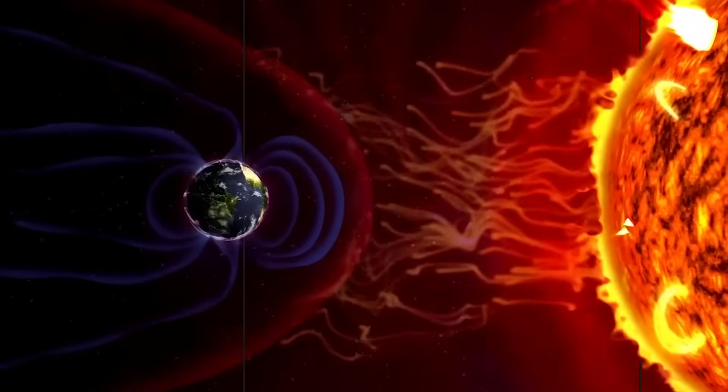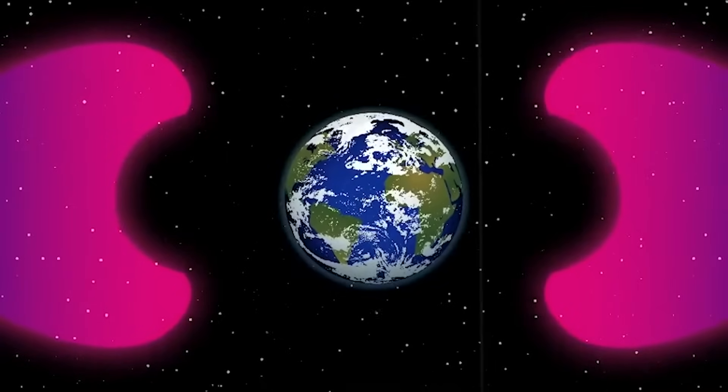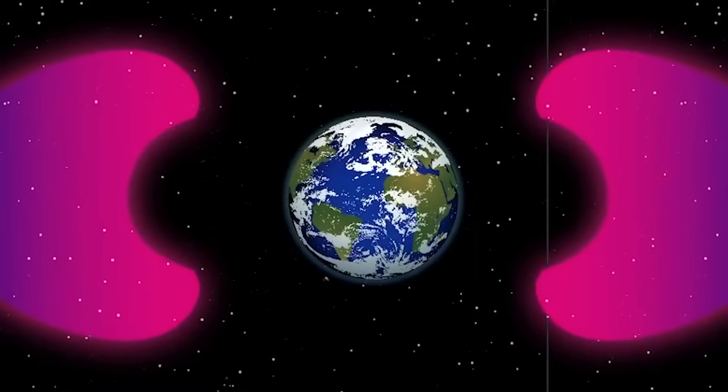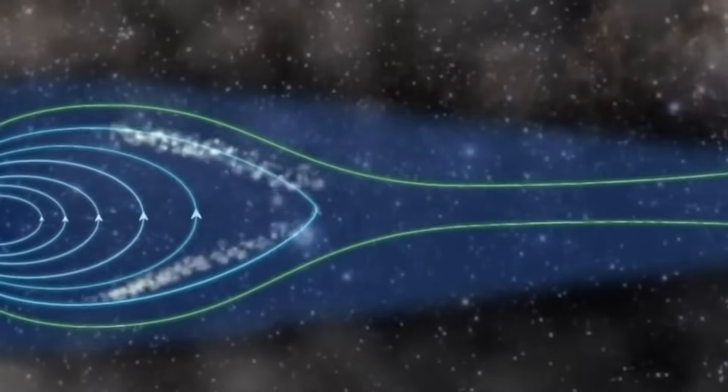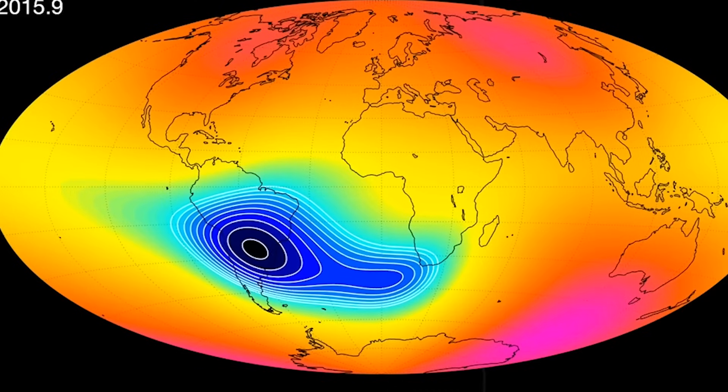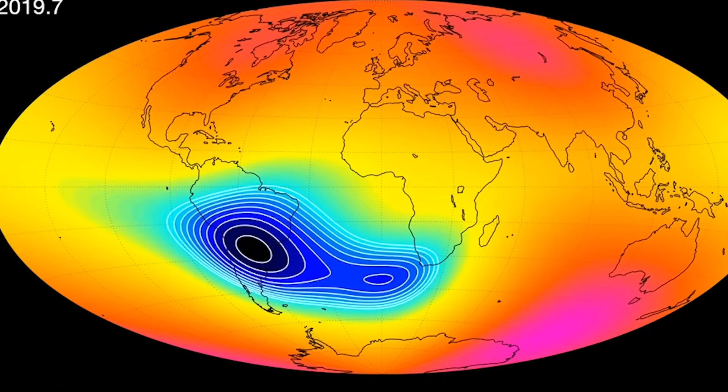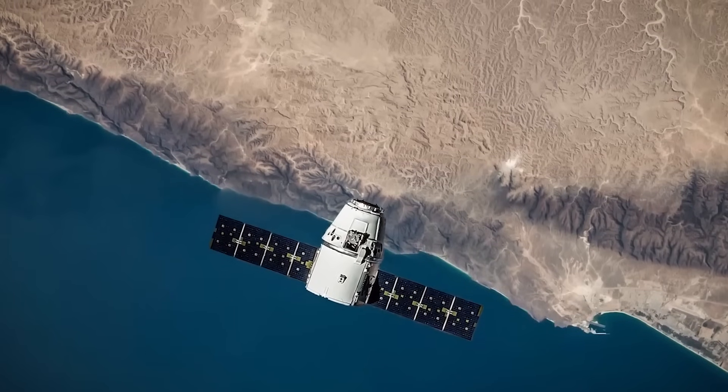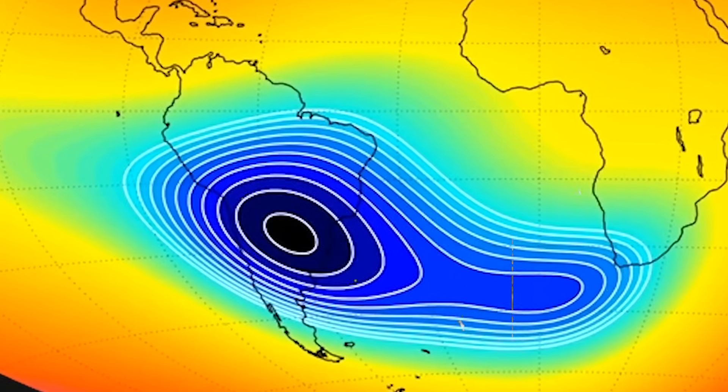Many fears about geomagnetic reversals stem from the belief that they would expose the Earth to deadly levels of solar and cosmic radiation, leading to widespread health crises. In reality, the Earth's atmosphere, particularly the ozone layer, continues to protect life from the sun's most harmful rays, even during a reversal. The increase in radiation exposure during a reversal is not drastic enough to cause direct harm to life on Earth.